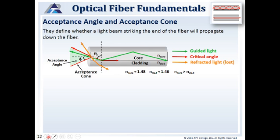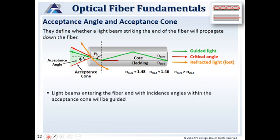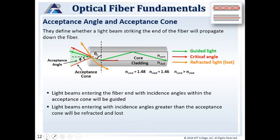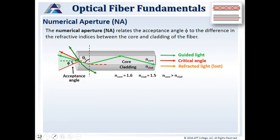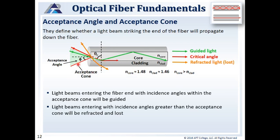We have an acceptance angle or an acceptance cone. The acceptance angle is the 2D way of thinking about this, and the acceptance cone translates that to a three-dimensional image. They define whether a light beam striking the end of the fiber will propagate down the fiber. Light beams entering the fiber with incident angles less than the acceptance angle are going to be guided down the core. Light beams entering with incidence angles greater than the acceptance angle are refracted and lost — they won't propagate down the core. At the critical angle, light travels down the core-cladding boundary.